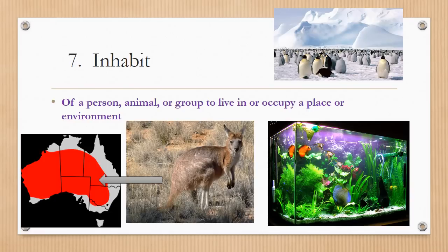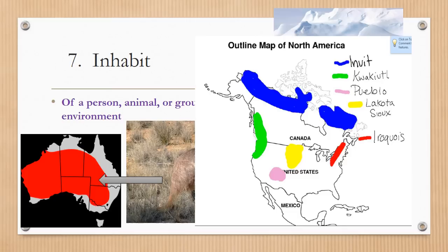Inhabit means of a person, animal, or group to live in or occupy a place or environment. The kangaroo inhabits the red portion of Australia. The penguins inhabit Antarctica. The fish inhabit the aquarium. It's an action word meaning to actually live in or occupy a place. In the same way, people groups inhabit locations: the Inuit people inhabited the Arctic region, the Kwakiutl inhabited the Northwest, the Pueblo inhabited the Basin and Range region, the Lakota Sioux inhabited the Great Plains, and the Iroquois inhabited the Northeast.